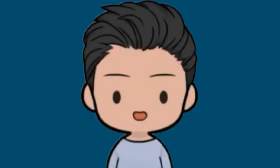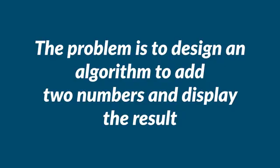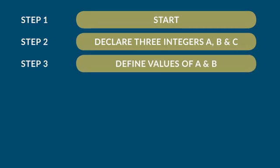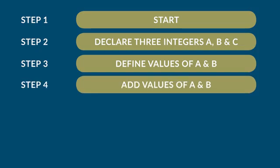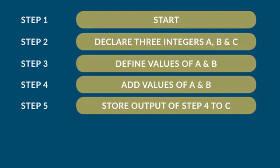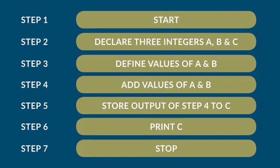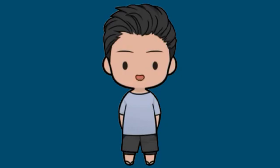Let's try to learn algorithm writing by using an example. The problem is to design an algorithm to add two numbers and display the result. Step 1: Start. Step 2: Declare three integers A, B, and C. Step 3: Define values of A and B. Step 4: Add values of A and B. Step 5: Store output of step 4 to C. Step 6: Print C. Step 7: Stop. Algorithms tell the programmers how to code the program.